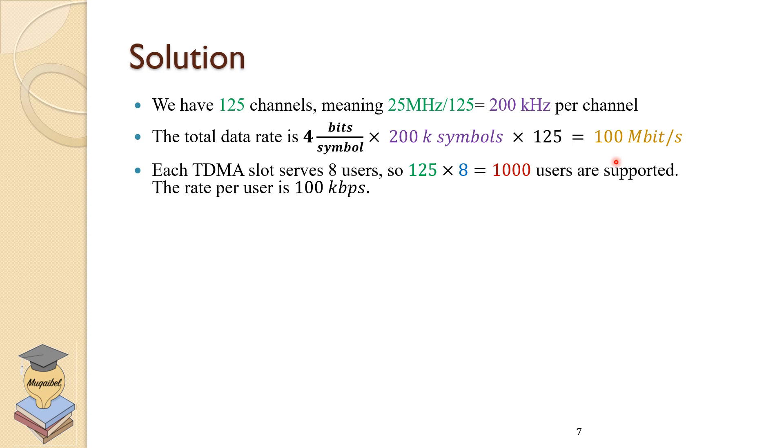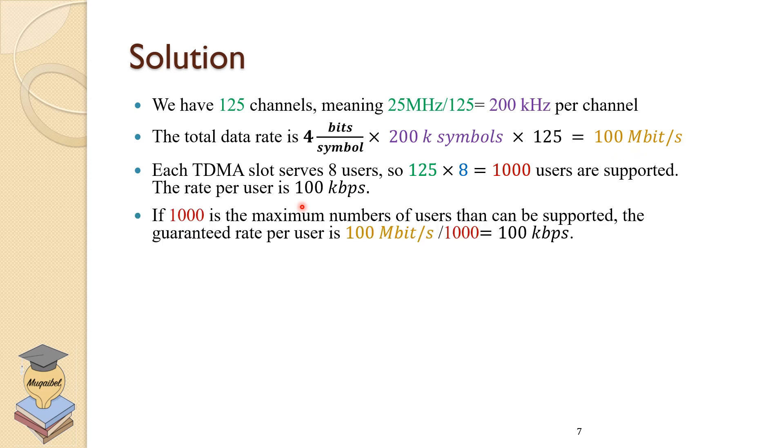Each TDMA slot serves eight users. So we have 125 channels times eight. The total number of users will be 1,000 because the bandwidth is divided into 125 channels. At the same time, we have eight users per channel. So we get 1,000 users are supported. The rate per user, if the total rate is 100 megabits per second, we have 1,000 users. You divide 100 megabits per second by 1,000, and you get 100 kilobits per second.